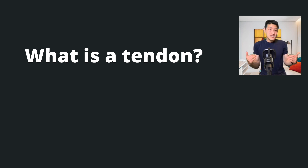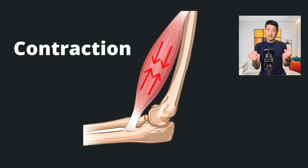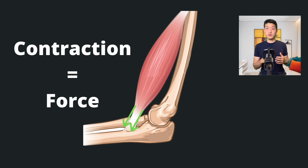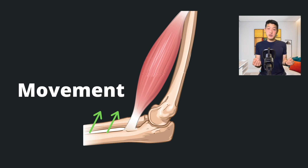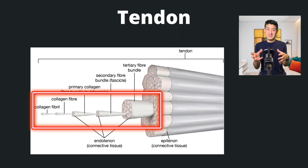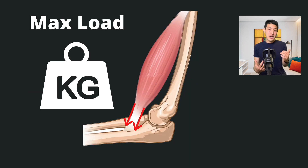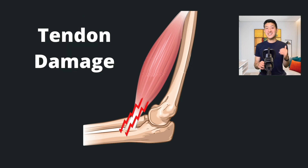So, what is a tendon? A tendon connects a muscle to a bone. When a muscle contracts, it generates a large amount of force, and this force is transferred through a tendon. The tendon then pulls on a bone, and this is how we get movement. Now tendons are made from a bunch of protein tightly packed together, and this is called collagen. Collagen fibers are what give tendons their strength. But even the strongest tendons have a maximum load that they can carry, and loads greater than this maximum amount will result in damage to that tendon.